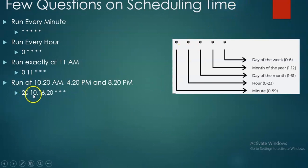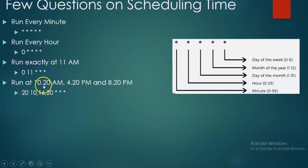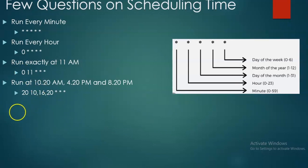So 10,16,20 for hours and 20 for minutes — meaning start at 10:20. Here zero means exactly at 11, but I need at 20 minutes past the hour, so I give 20 in the minutes position.